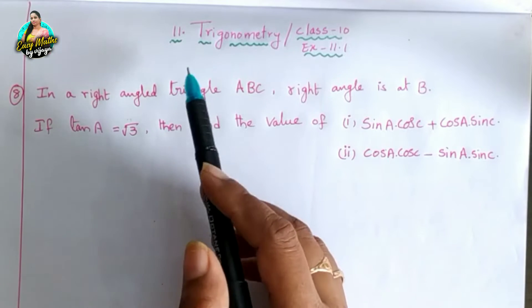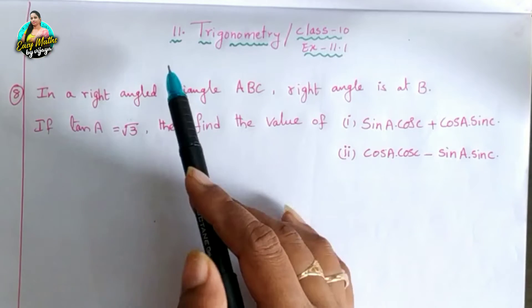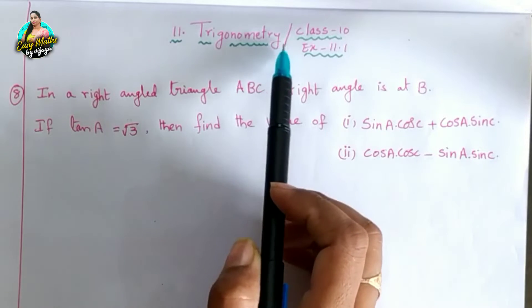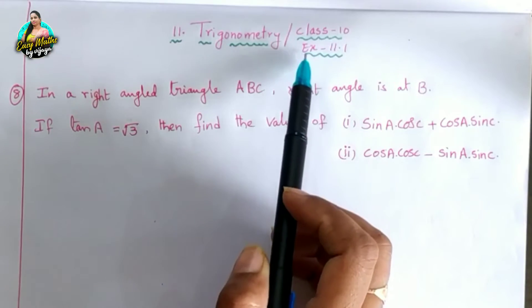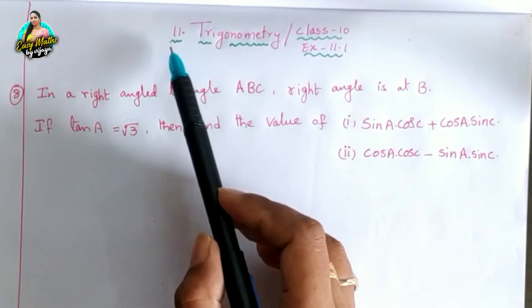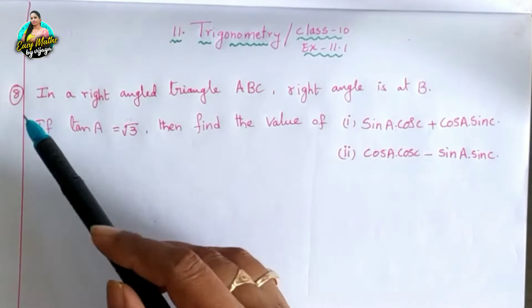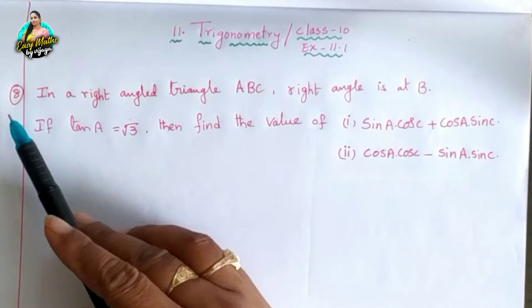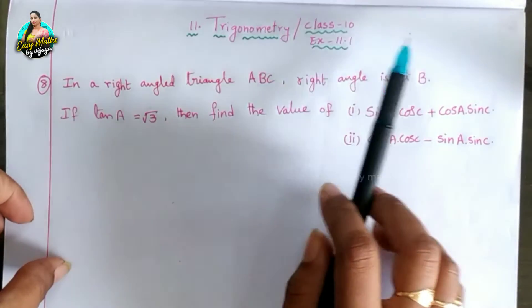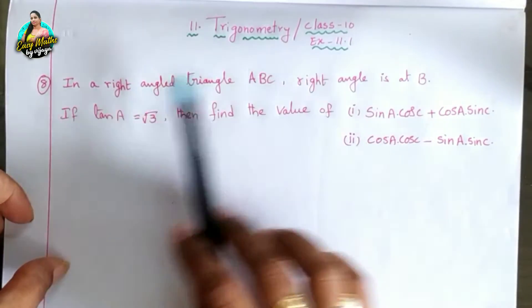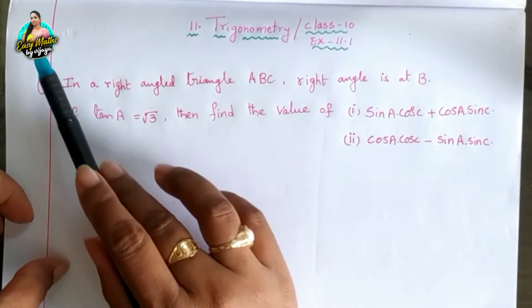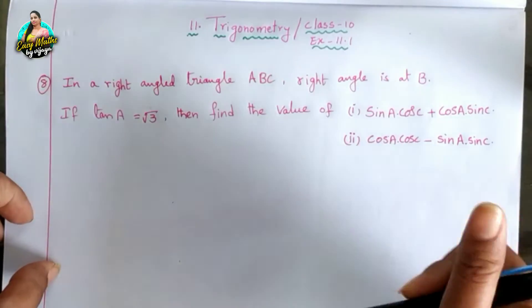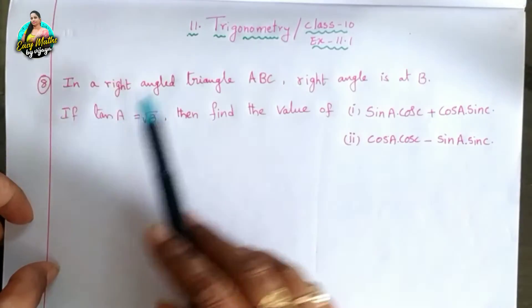Hi everyone, welcome back to our channel Easy Maths by Vijaya. Our topic is Trigonometry Class 10, Exercise 11.1, Chapter 11. Previous questions 1 to 7 are available in the i-cards and the link is in the description.